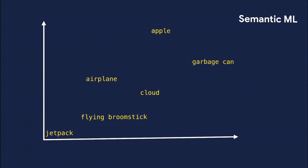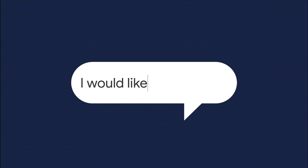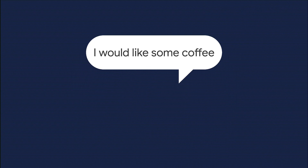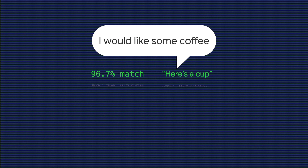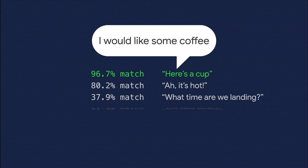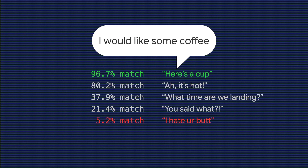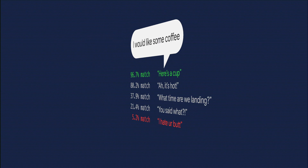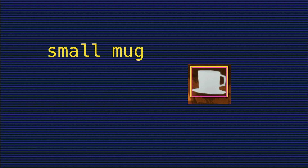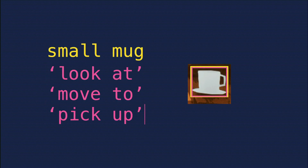You can also use SemanticML to help pick out likely responses to queries. So if I say I would like some coffee, SemanticML can tell me that "here's a cup" is a better response than "I hate your butt." Anna uses SemanticML to describe her game worlds in plain English and then have a model infer how the world should behave.